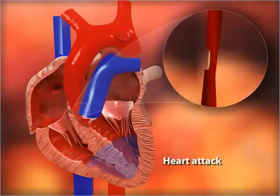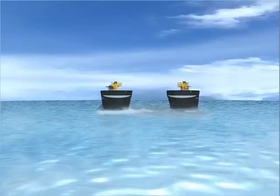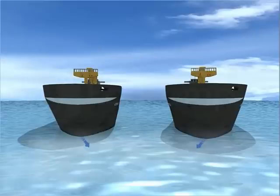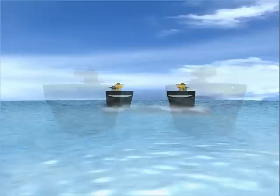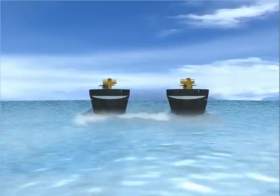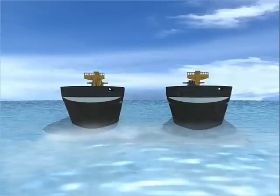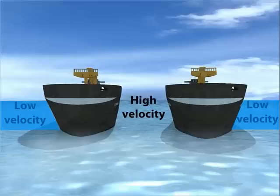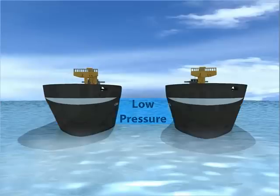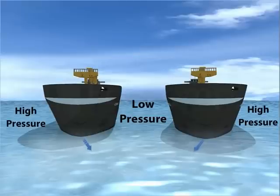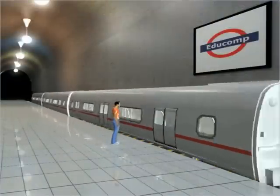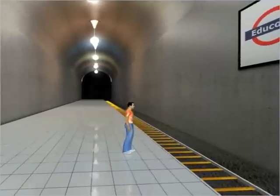This cycle might lead to a heart attack. Two ships sailing in an ocean in the same direction, when they come close to each other, get pulled towards each other. The velocity of water between the two boats becomes very large compared to the velocity on the other sides of the boats, thereby decreasing the pressure between them. The boats are pulled towards each other due to the higher outward pressure. A person getting pulled towards a fast-moving train can be explained using the same reason.